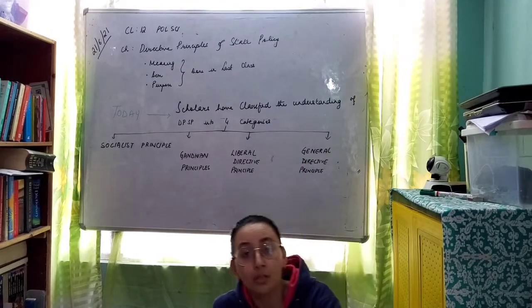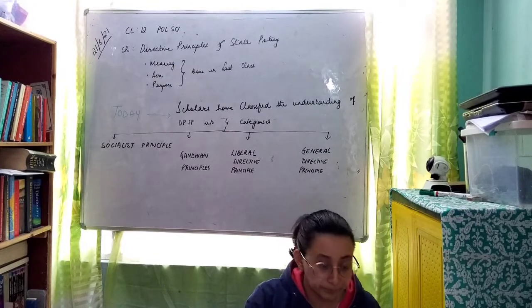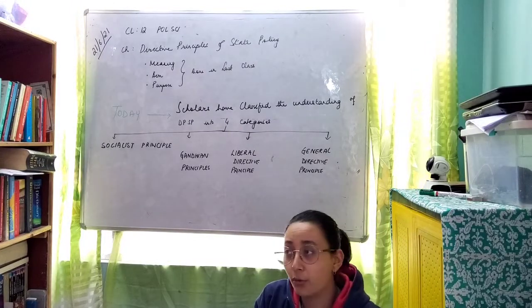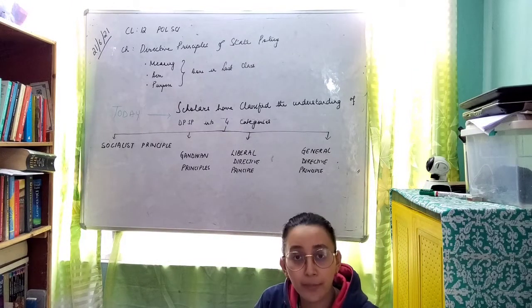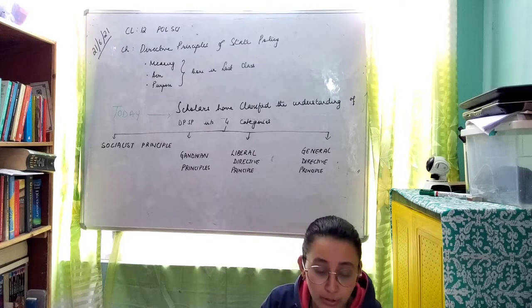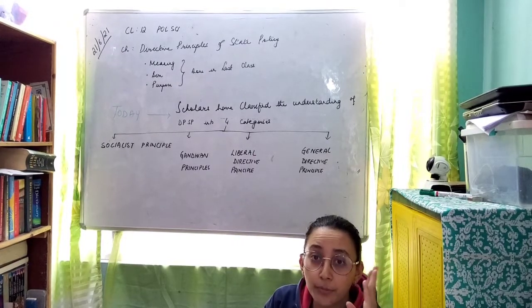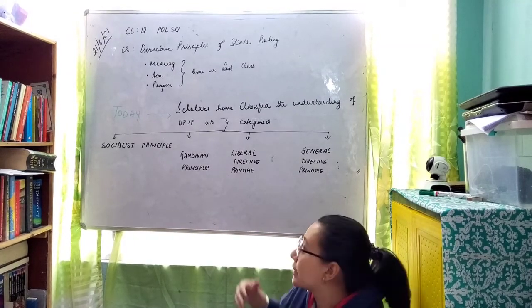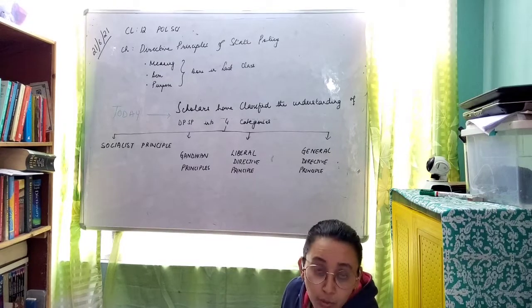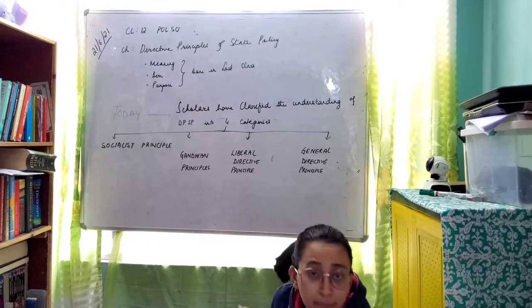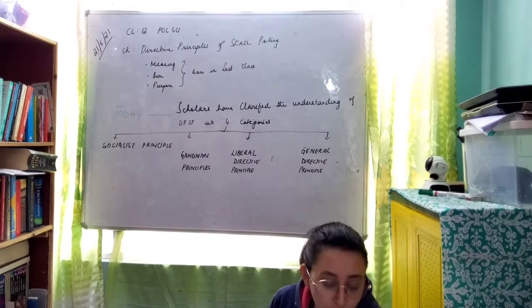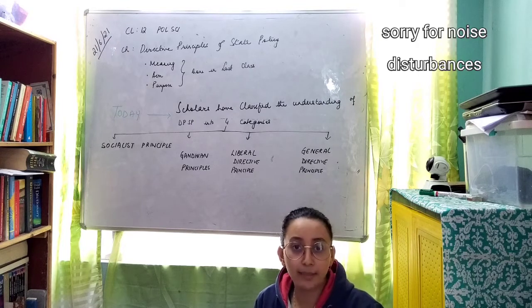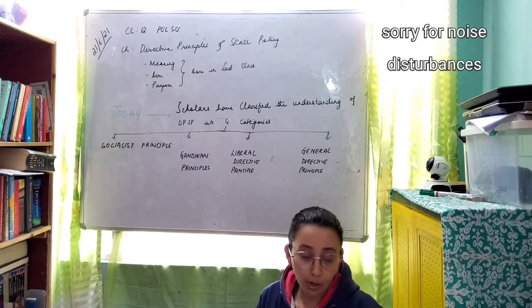So what do we mean by Socialist Directive Principles? Scholars have divided the Directive Principles of State Policy into four categories, and today let's discuss the Socialist Principle. Socialism mainly calls for public ownership — it focuses on public ownership rather than private ownership or control of property and natural resources.